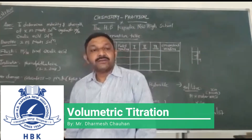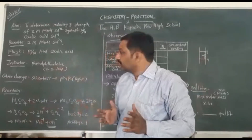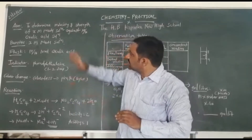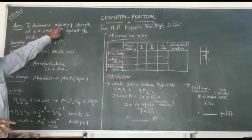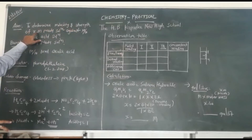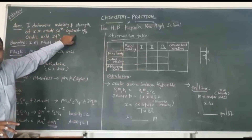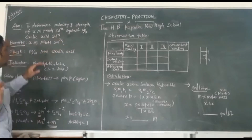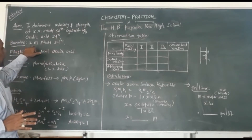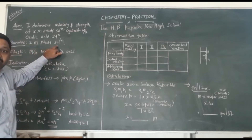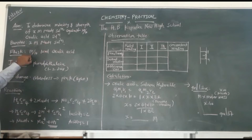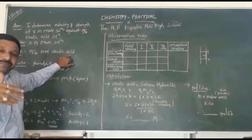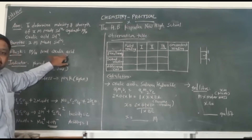Good morning. Today I will perform practical number one: your first volumetric titration. The aim is to determine the molarity and strength of an x-molar NaOH solution against M/10 oxalic acid. In the burette, you have to fill up the x-molar NaOH solution. In the flask, you have to take M/10 (0.1 molar) 10 ml oxalic acid solution through a pipette into your conical flask.